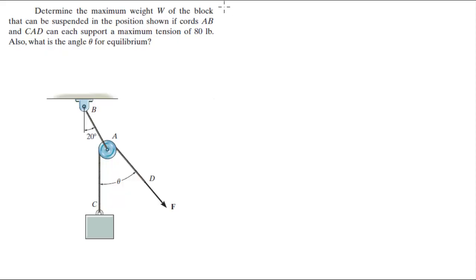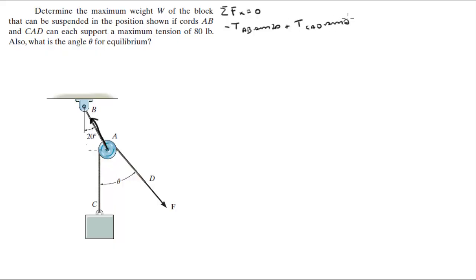In statics, the sum of the forces in the x-direction is equal to 0. So the negative tension AB — which is this tension right here — times sine of 20, which is the x-component of that tension, plus tension CAD times sine of theta, which is the x-component of this force, is equal to 0. Since the weight force goes straight down, it has no x-component.